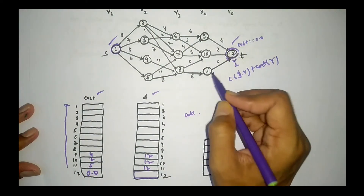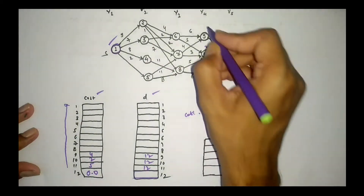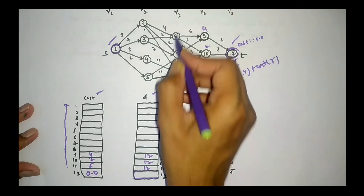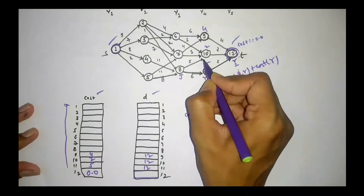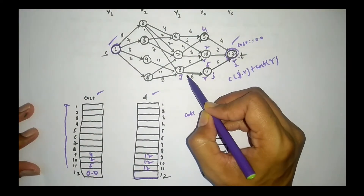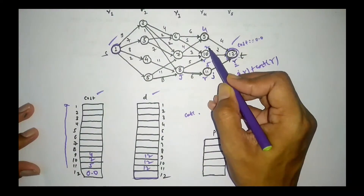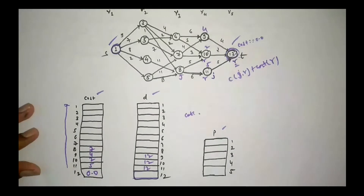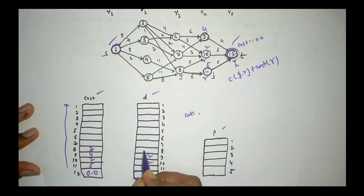Now vertex 8's cost: it connects to both vertex 10 and vertex 11, so both are R values. We calculate both costs: 6 + cost(11) = 6+5 = 11, and 5 + cost(10) = 5+2 = 7. Minimum is 7, so cost(8) = 7 and D(8) = 10. Similarly for vertex 7: it connects to vertices 10 and 9. Costs are 3+2 = 5 and 4+4 = 8, so minimum is 5 and D(7) = 10.